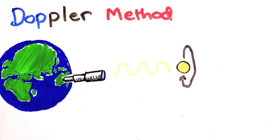Measuring Doppler shifts only tells us the component of the velocity in our direction. That can lead us to underestimate the mass of the planet, or in the worst case, we won't be able to tell that there is a planet there at all.